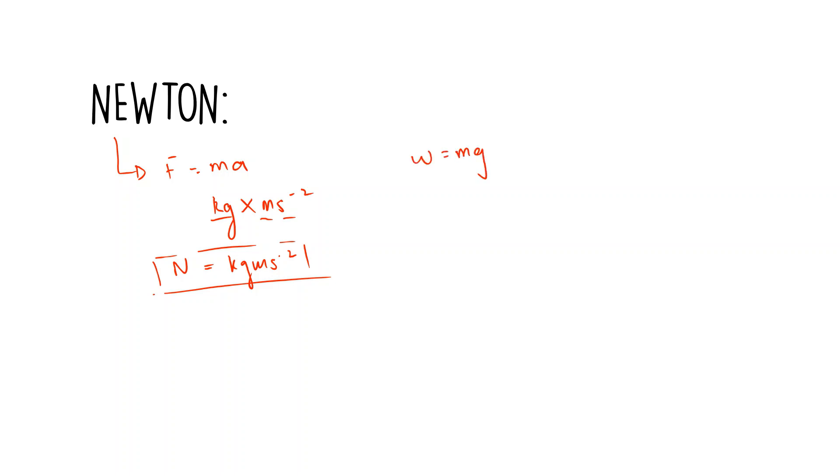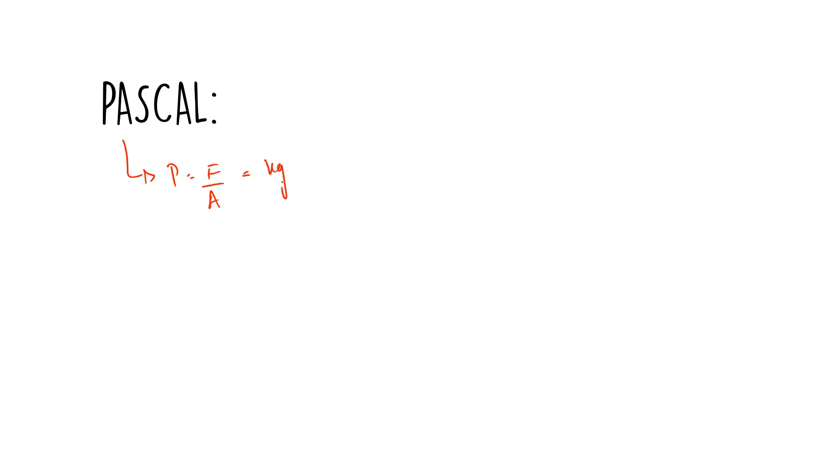You can also do the same thing with W = mg; the criteria is just to have a formula which involves the unit Newton, that is force. Now we move on to Pascal. Pascal is the unit for pressure, so you can use any formula that involves pressure. I will be using P = F/A. Just as we did, force is kg⋅m/s² and area is m². After canceling, we get kg/(m⋅s²).